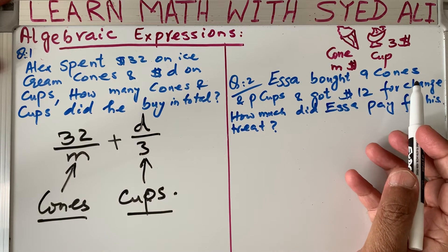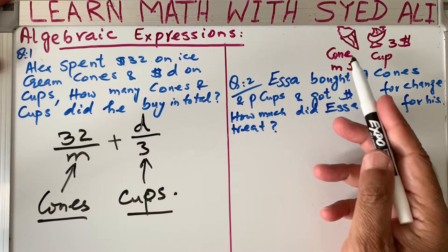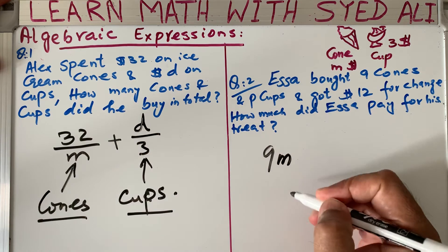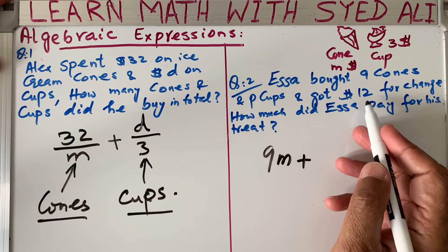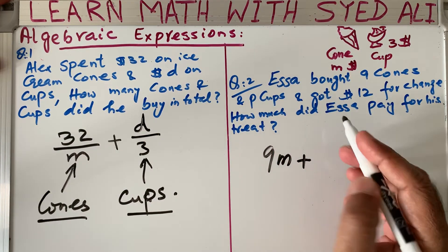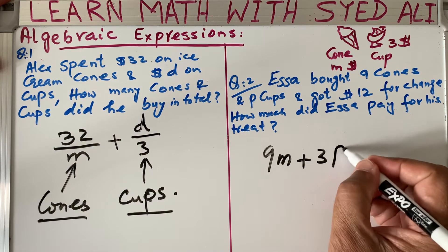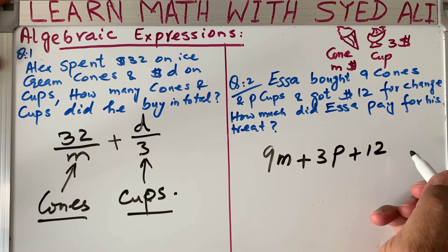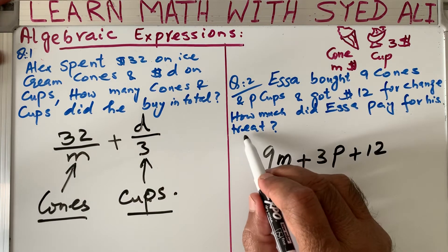Another question: Isa bought nine cones. The price of a cone is m dollars, so nine cones cost nine times m, which is 9m. He also bought p cups, and cups cost three dollars each, so p cups cost 3p. He got twelve dollars worth — so how much did he pay in total for the treat?